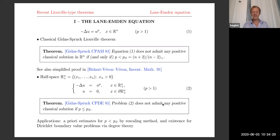This same equation, but with Dirichlet boundary conditions in the half space, has no positive classical solution provided P is subcritical or even critical. This is already a slight difference, which will turn out to be much bigger than what it looks like.